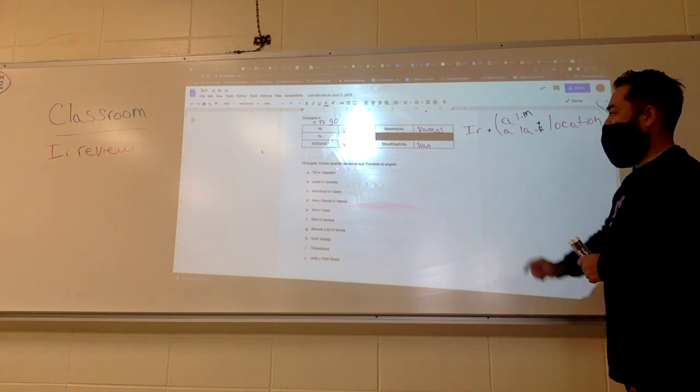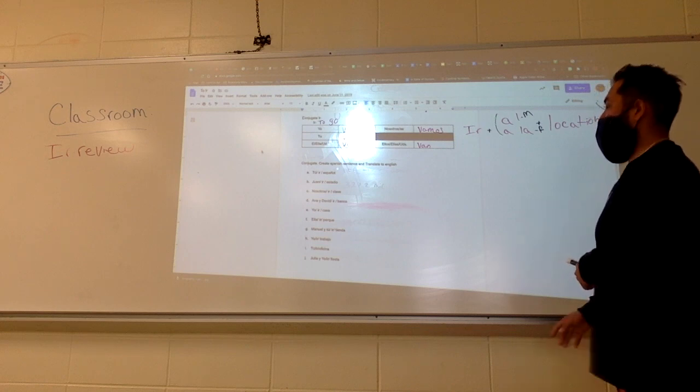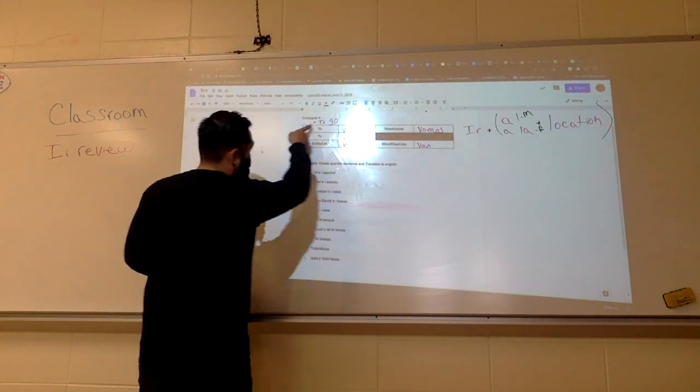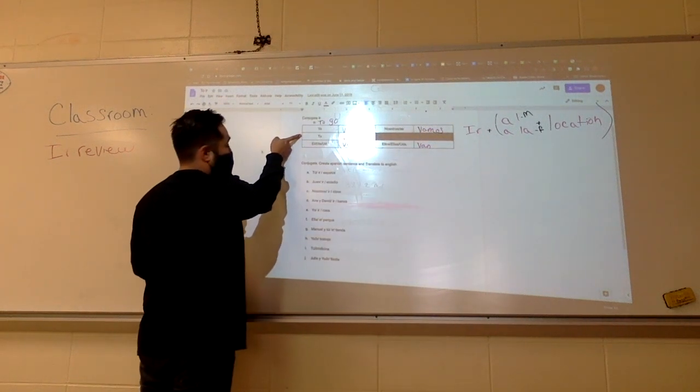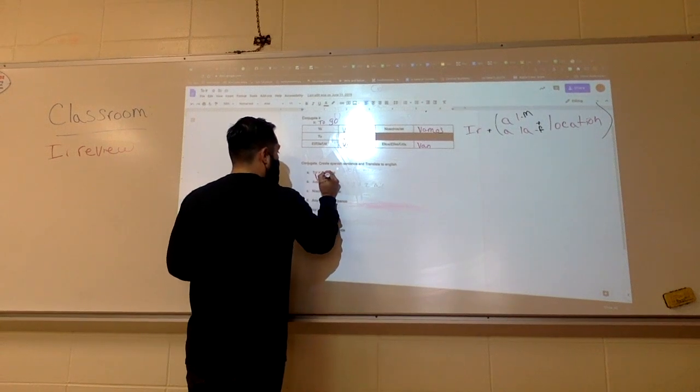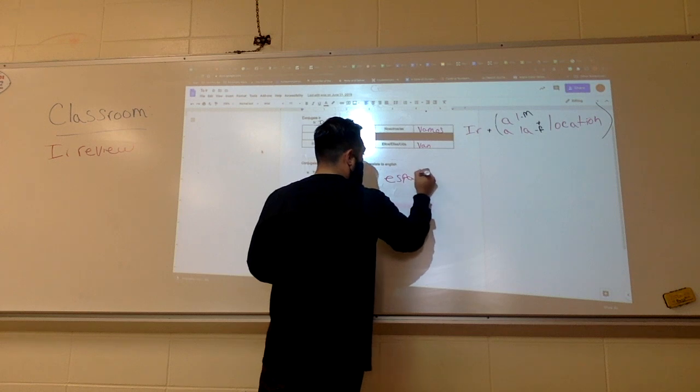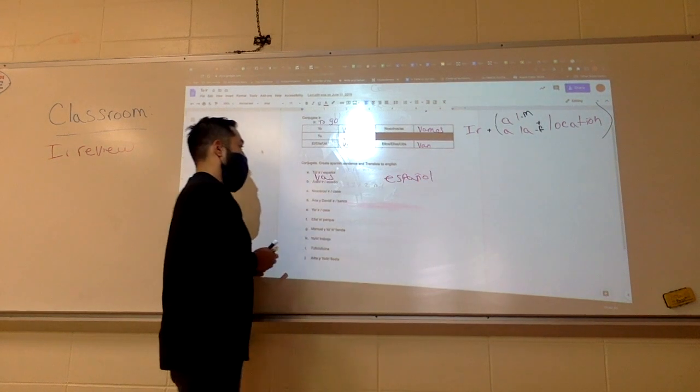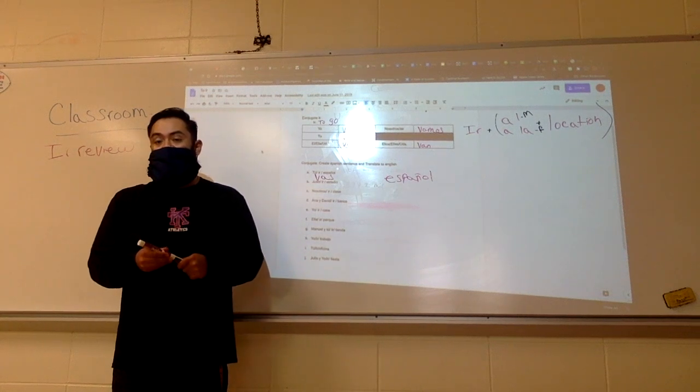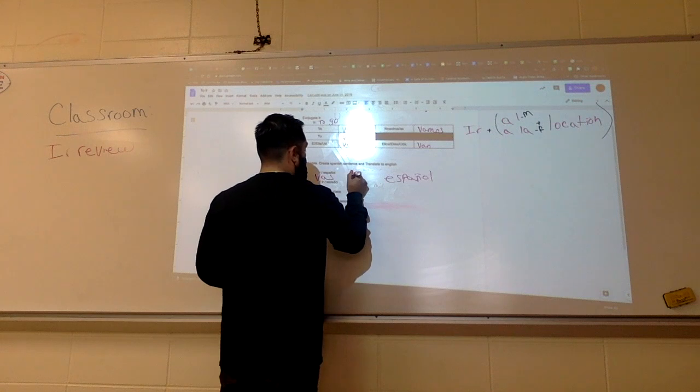So, if we look at the first one, let's talk through it. How many people is tú? One. Don't need that. Am I tú? No. Am I talking to you? Yes. So, it's vas. Vas. So, if we're going to Español, based on Español, masculine or feminine? Masculine. So, what goes in between? Al. Al.